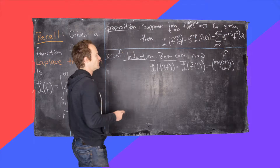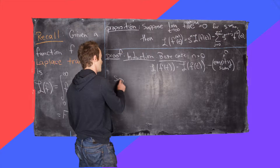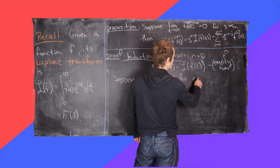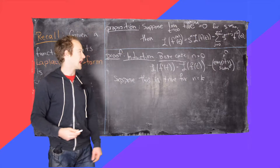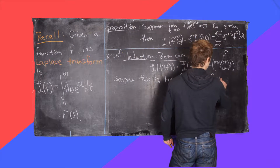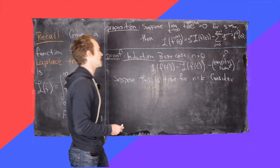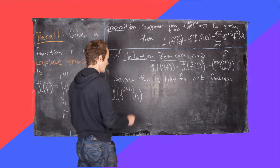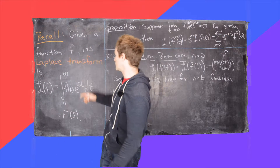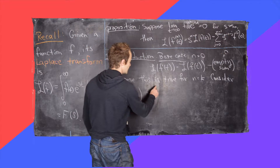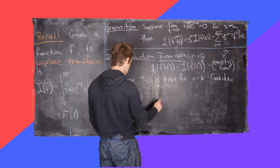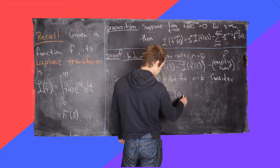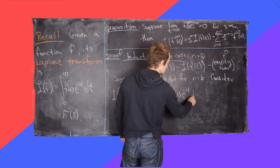From here we move on to the induction hypothesis. Let's suppose this is true for n equals k, and then consider the k plus 1 case to show it's true there as well. We want to look at the Laplace transform of the (k+1)th derivative of f, and we're going to evaluate that using the definition of the Laplace transform. So this is equal to the integral from 0 to infinity of the (k+1)th derivative of f(t) times e to the minus st dt.